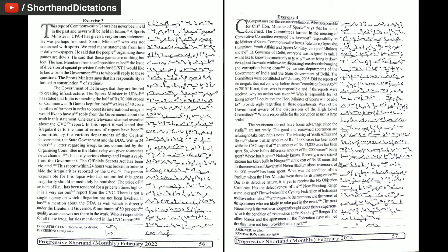The Officials Secrets Act has been violated. This report within 24 hours was broken in order to hide the irregularities reported by the CVC. The person responsible for this lapse who has committed this gross irregularity should immediately be punished.